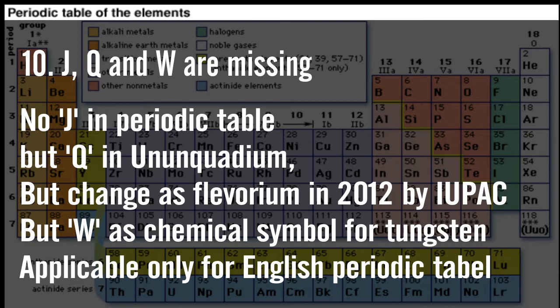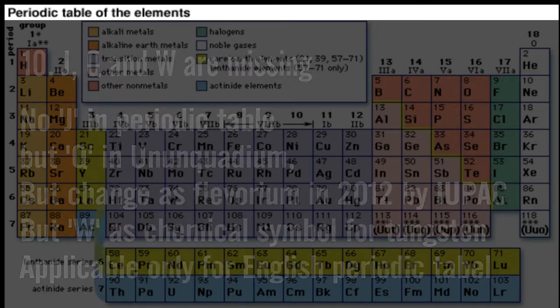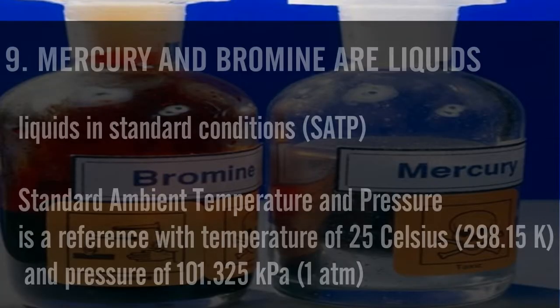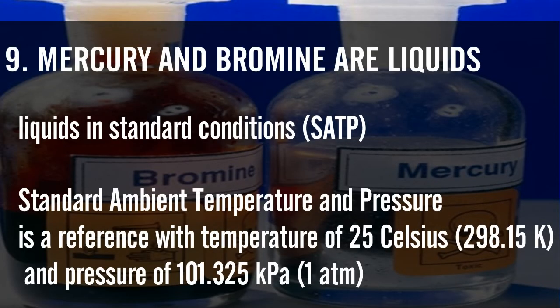In the English periodic table, there is no J, Q, or W as element symbols. The first fact is that in the periodic table, mercury and bromine are liquid at room temperature — that is 25 degrees Celsius and 1 atmospheric pressure.